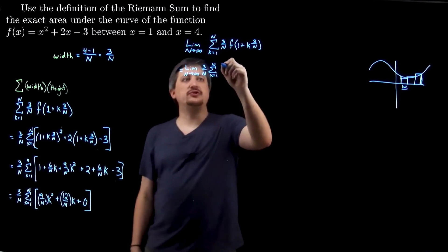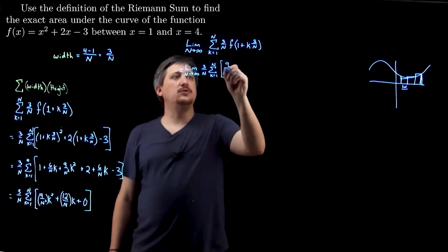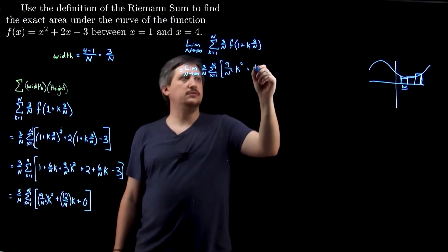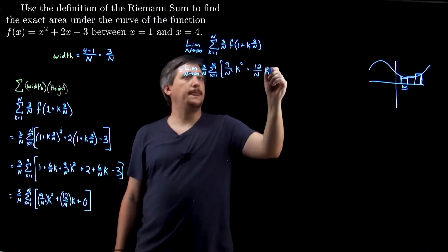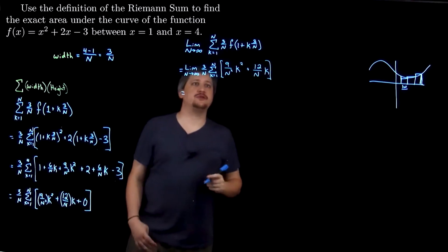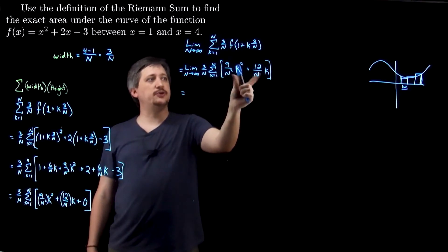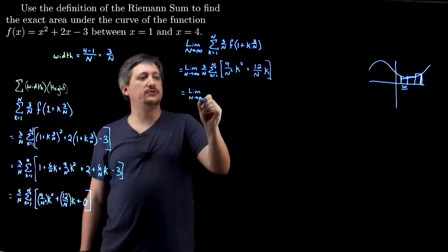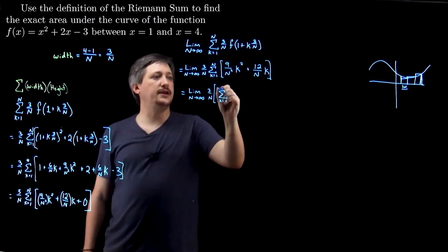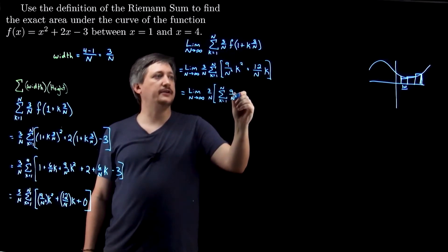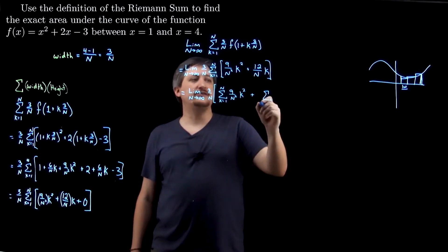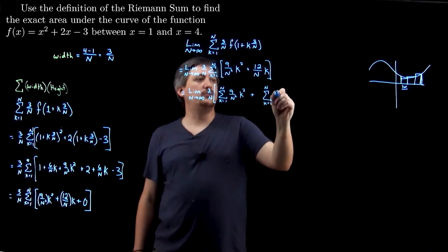So I replace what I found: I now have nine over N squared K squared plus twelve over N K. I'm going to do a slightly crazy thing here — this is a finite sum, so I'm going to use that to break it apart. I'll have the limit as N goes to infinity of three over N times the sum K from one to N of nine over N squared K squared, plus the sum K from one to N of twelve over N K.